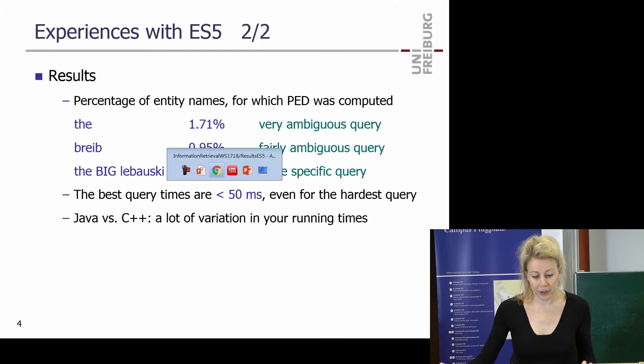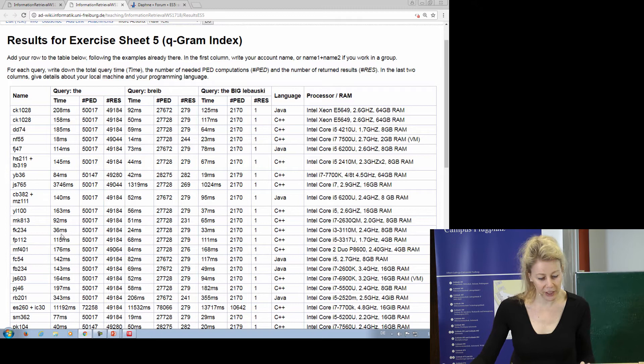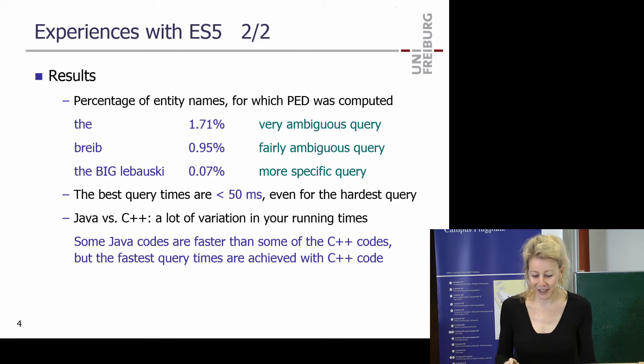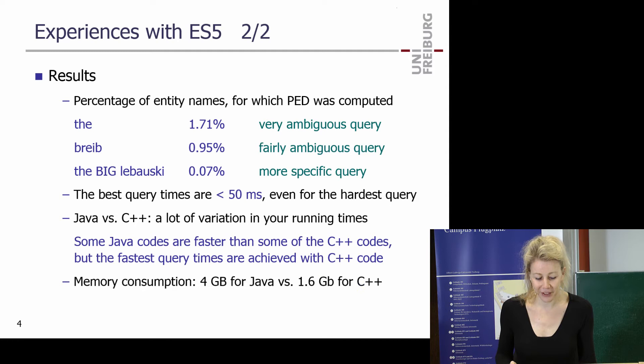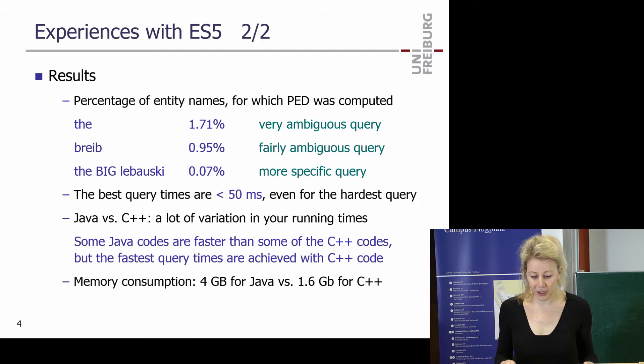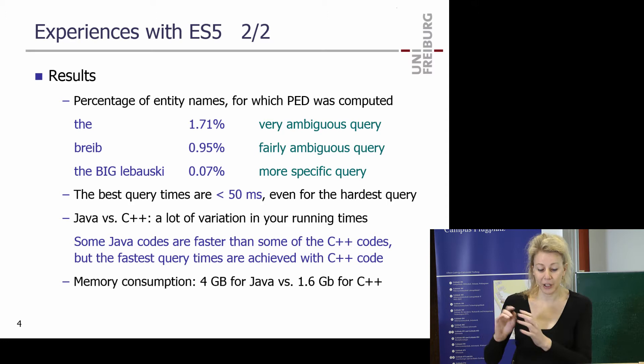There was a lot of variation in running time — some seconds, some 200, some 36. Some Java code is faster than some C++ code. It's not that you use one language and you're always faster — it depends on a lot of details. The fastest query times are with C++, like 20 milliseconds. Java uses a lot of space and unfortunately there's very little you can do about it — it's the array lists, space overhead built in, and there's the garbage collector which you can't really control.